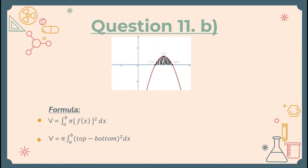The formula is V equals the integral from A to B of pi times f(x) squared dx. We use dx because it revolves around the x-axis. If it revolved around the y-axis, it would be dy.